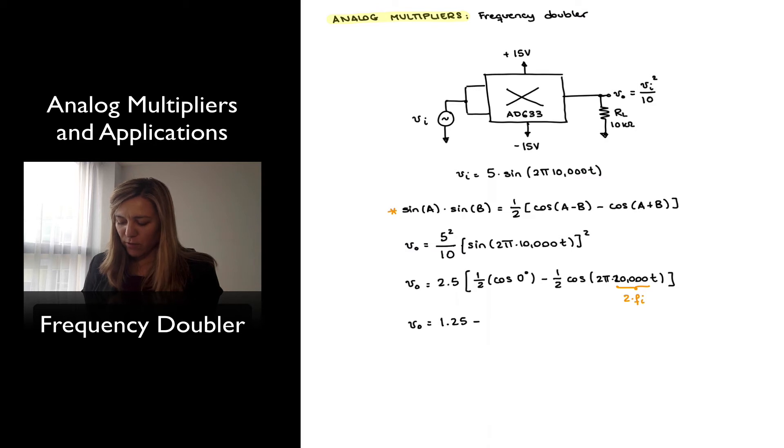Minus 2.5 over half, which is 1.25, times the cosine of 2π times 20,000t.